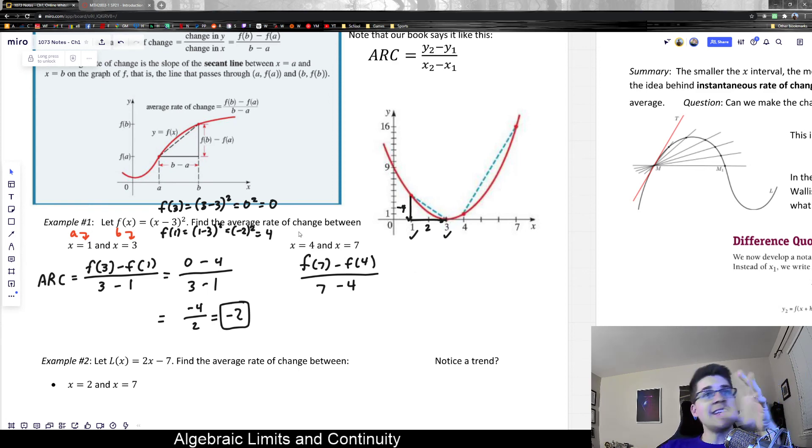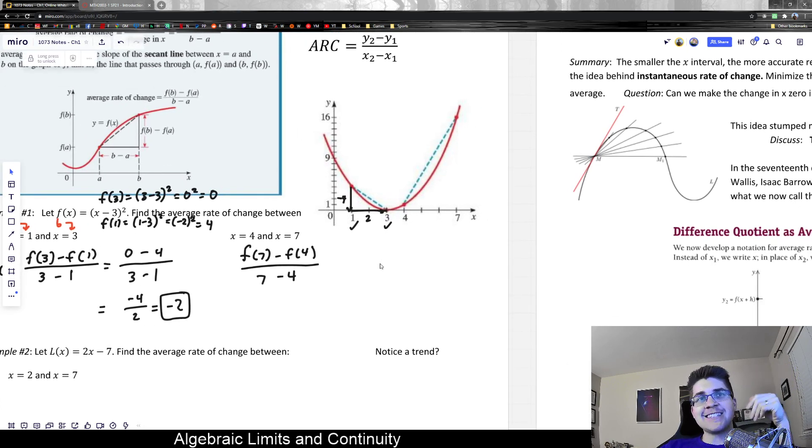Technically, you can do it in either order. You don't have to always, it doesn't matter which one is A and B. But it's easier on the signs to keep the denominator positive, which means use the bigger one first, smaller one second.